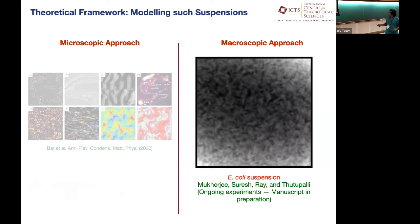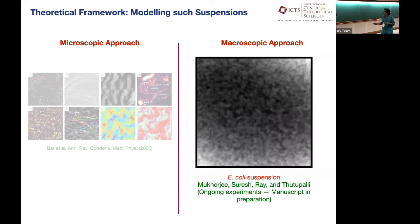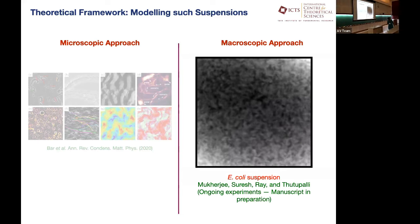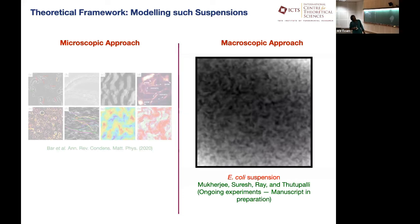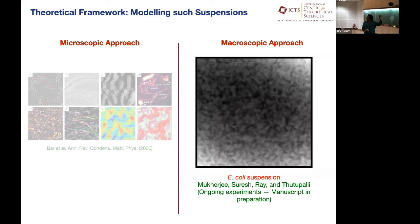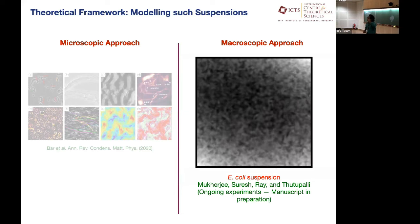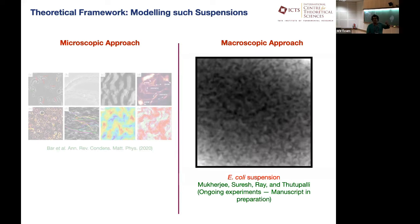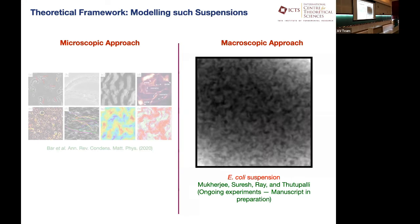What we are going to do for the next 40 odd minutes is look at this movie from experiments we are currently doing on E. coli suspensions — a bunch of bacteria swimming at very low Reynolds number. When you look at this movie, you realize it's possible to have a more fluid-like description — a continuum description. You coarse-grain this field, forget the individual bacteria, and write down a continuum description.